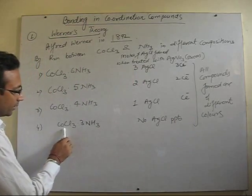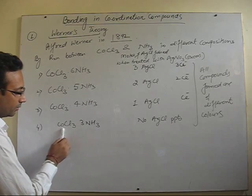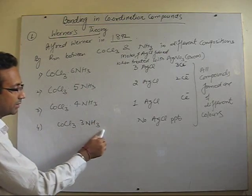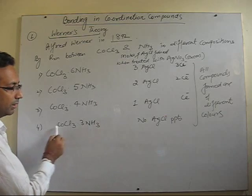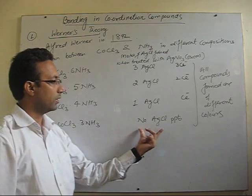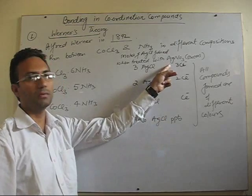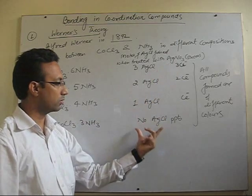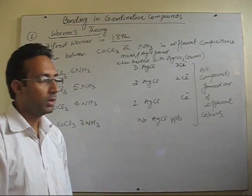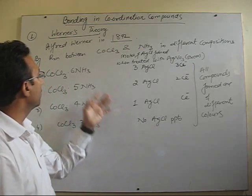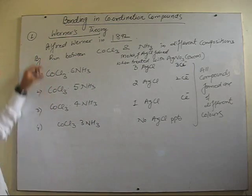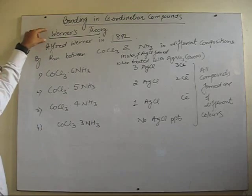In the last case, where the ammonia content in the compound is decreasing, when made to react with silver nitrate in solution, it gives no precipitates of AgCl. All these different behaviors of these compounds led Werner to develop his theory.